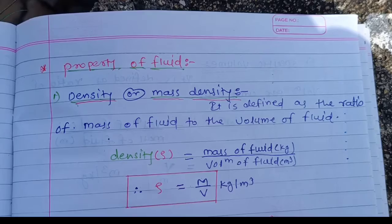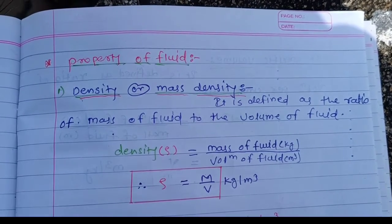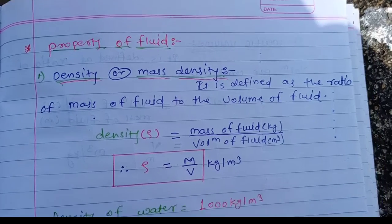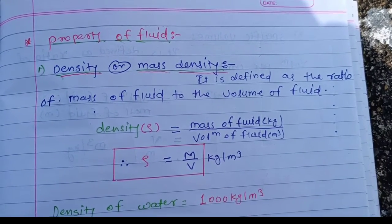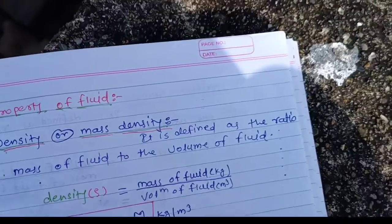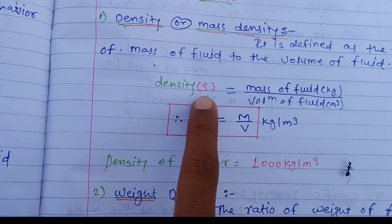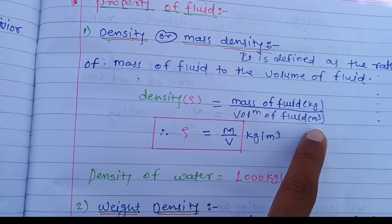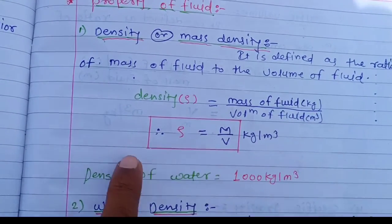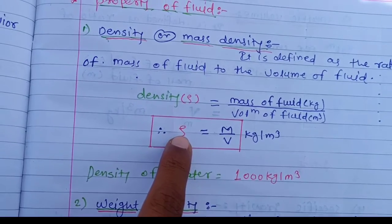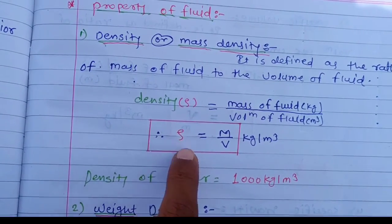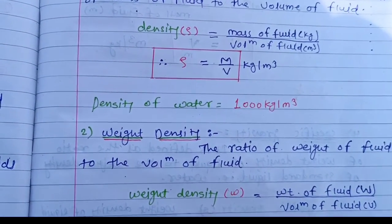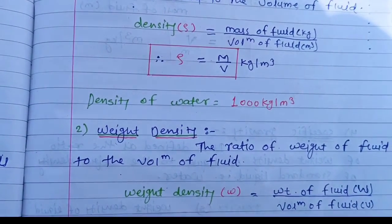The first property of fluid is density, also called mass density. It is defined as the ratio of mass of fluid to the volume of fluid. Density is denoted by rho, with units kg per meter cube. The formula is rho equals m divided by v. The density of water is 1000 kg per meter cube.